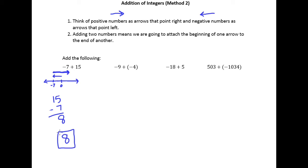Let's try this with the next example. We've got negative nine plus negative four. Make another small number line, I'm going to put a zero in here.